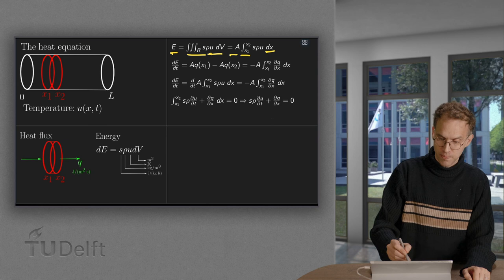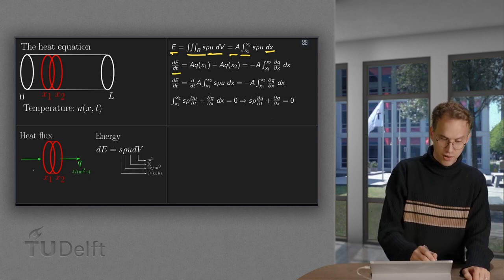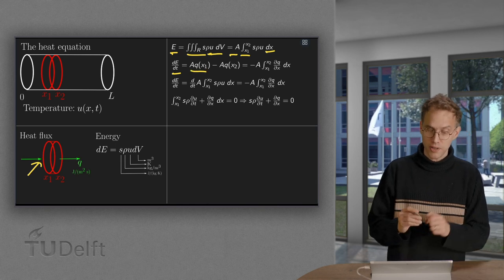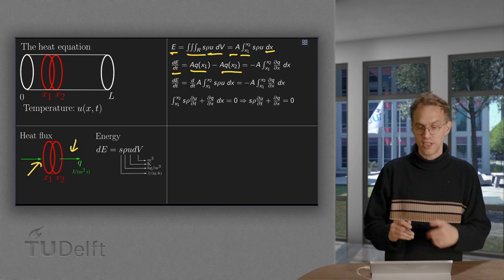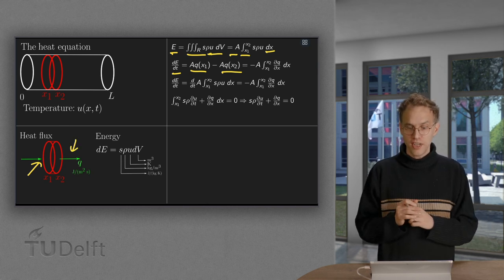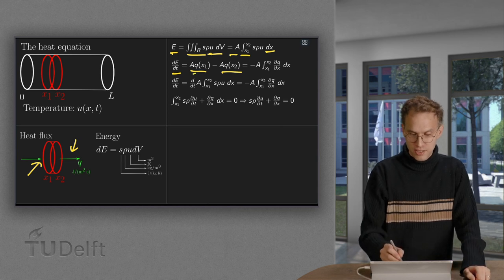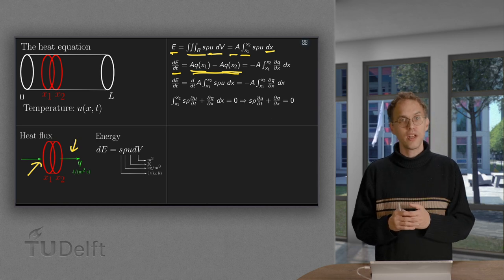What's the change of energy? Well, the dE dT is the amount of energy flowing in over here, so A times Q at X1, minus the total amount of energy flowing out here, which is the area A times Q at X2. And, we want to equate, so we are going to write this part as an integral. So, how can we do that? Well, we compute dQ dx, and then we integrate.